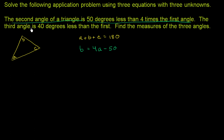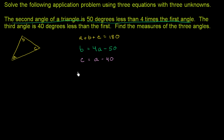The next constraint they give us: the third angle is 40 degrees less than the first. So the first angle is A, and C is going to be 40 degrees less than that — so C equals A minus 40. We now have three equations with three unknowns, and we just have to solve for them.